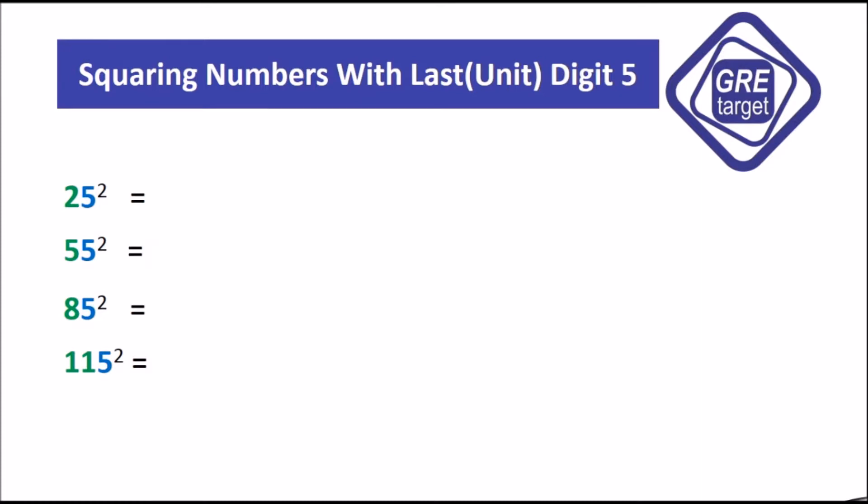Suppose our example is 25 square. Now take the number which is in front of 5, which is 2, and multiply by one bigger than itself, which is 3. 2 into 3 equals 6. When we do that we get 6, which we write over here, and finally we simply add 25 at the end.